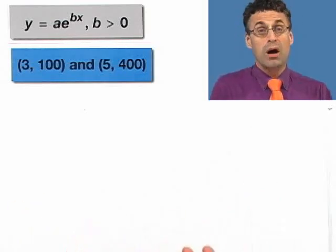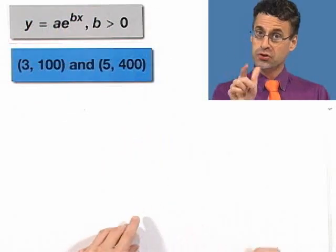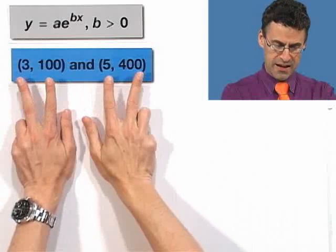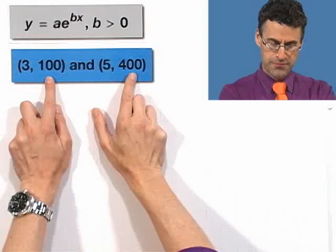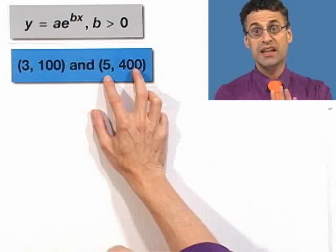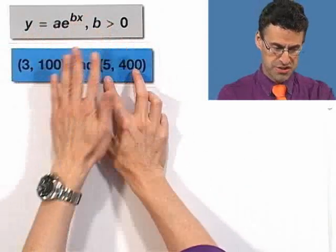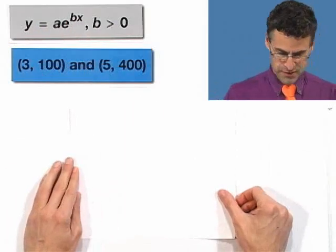Here's what we're given. We're given that at three hours, we have a population of 100, and at five hours, we have a population of 400. Remember, the X represents time, and the Y represents population here. And our job is to use this model to answer some interesting questions about the population. Well, okay, where do you start? The mystery is the A and the B. But here's the cool thing. We have two unknowns, and we have two facts.